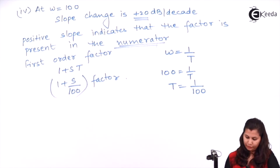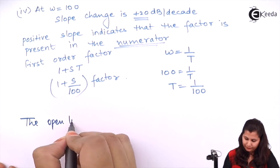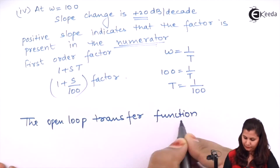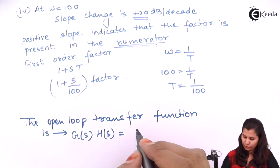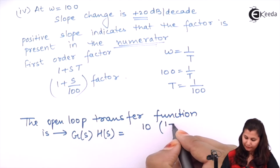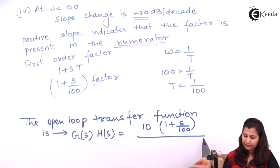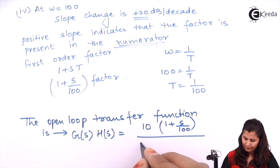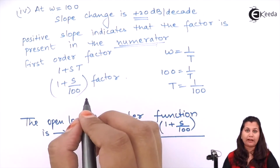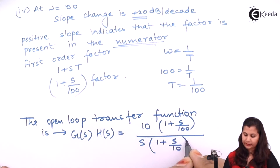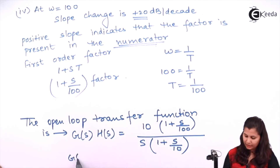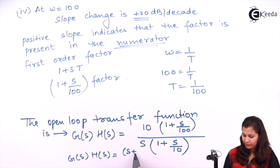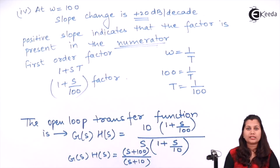So we have the open loop transfer function. K equals 10 is the constant term. The numerator factor is (1 + s/100) and the denominator has the integral term s and the first-order factor (1 + s/10). If we simplify this, it becomes G(s)H(s) = (s + 100) / [s(s + 10)]. This is our resultant transfer function. I hope this problem is clear to you.